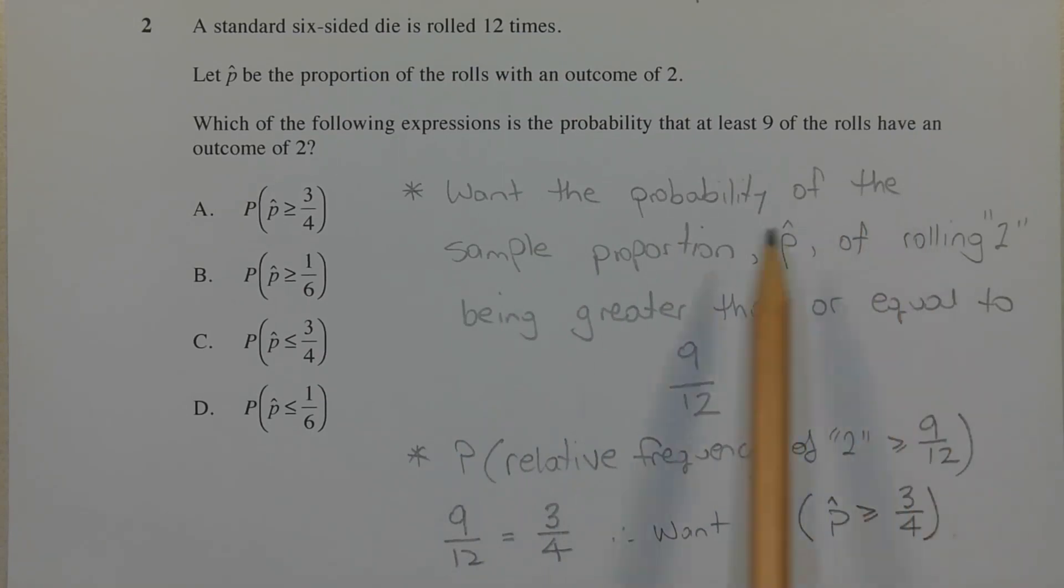So we want the probability of the sample proportion P hat of rolling a 2 to be greater than or equal to 9 out of 12. So that's rolling 9 2s out of 12 rolls.